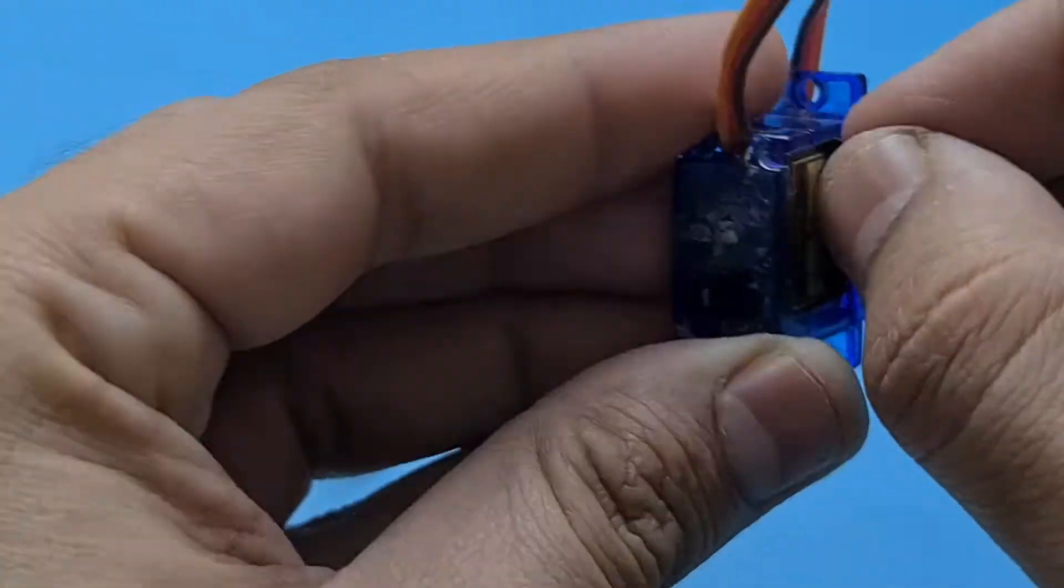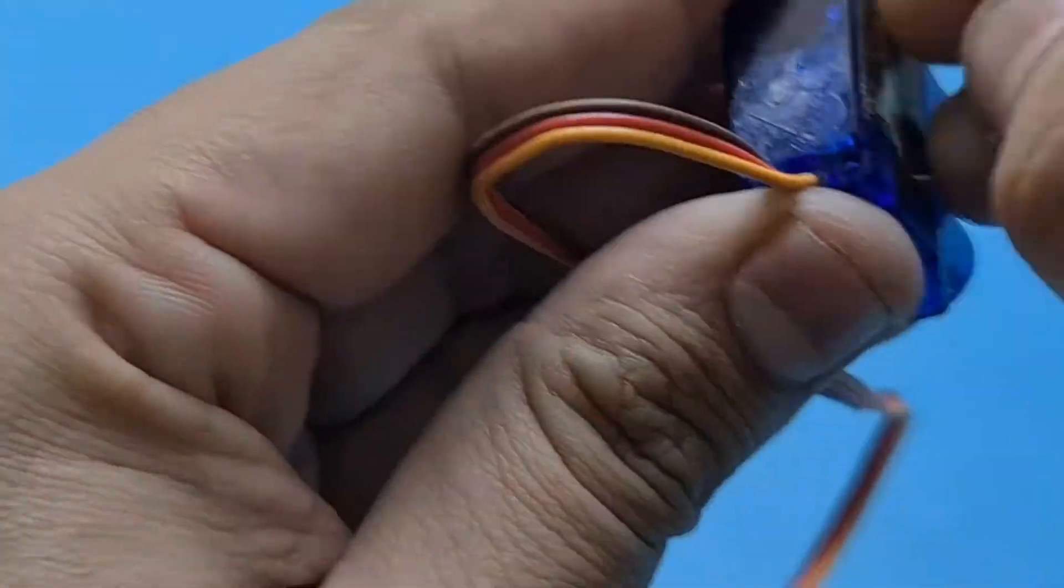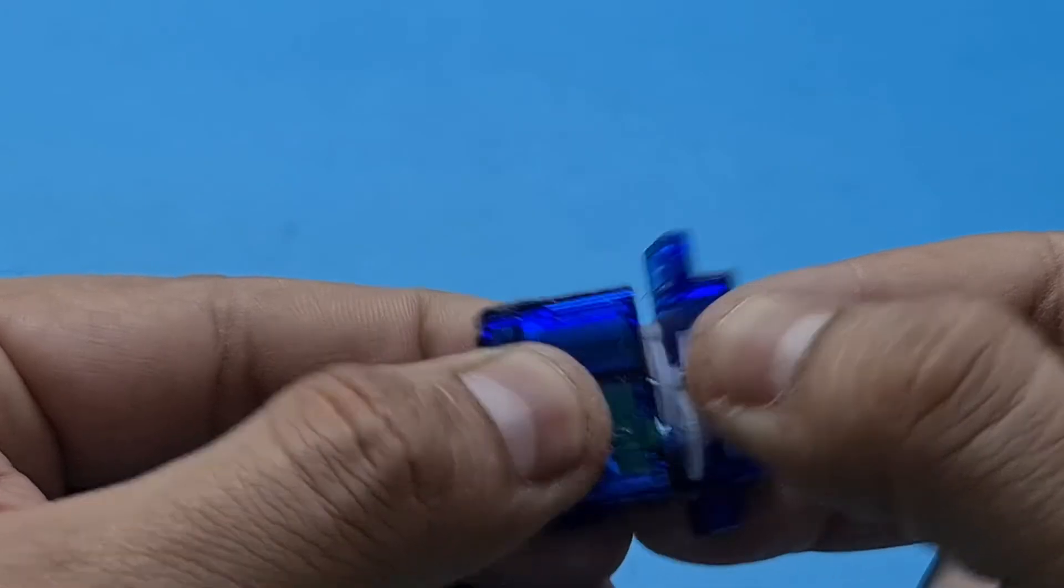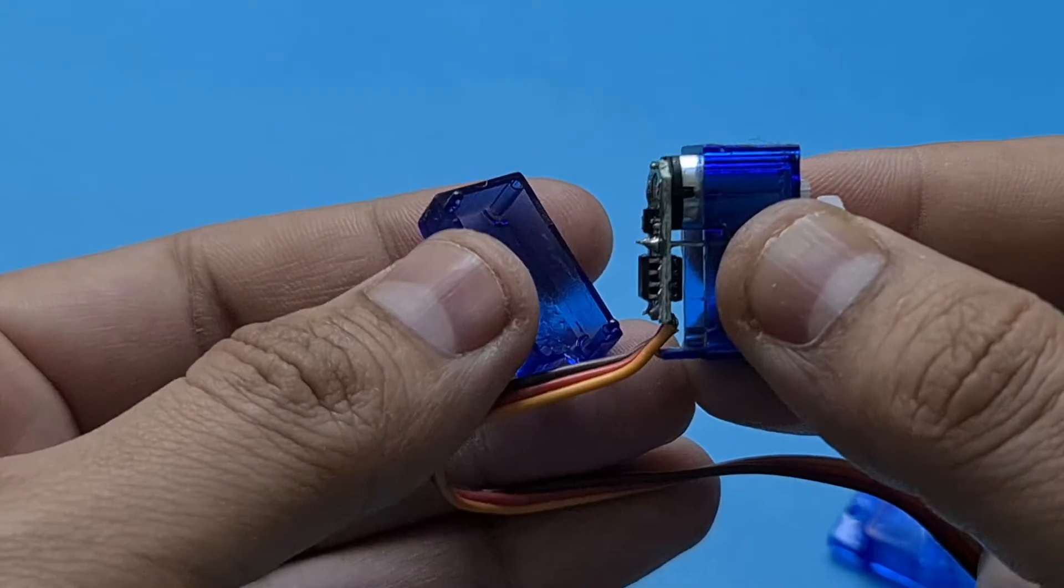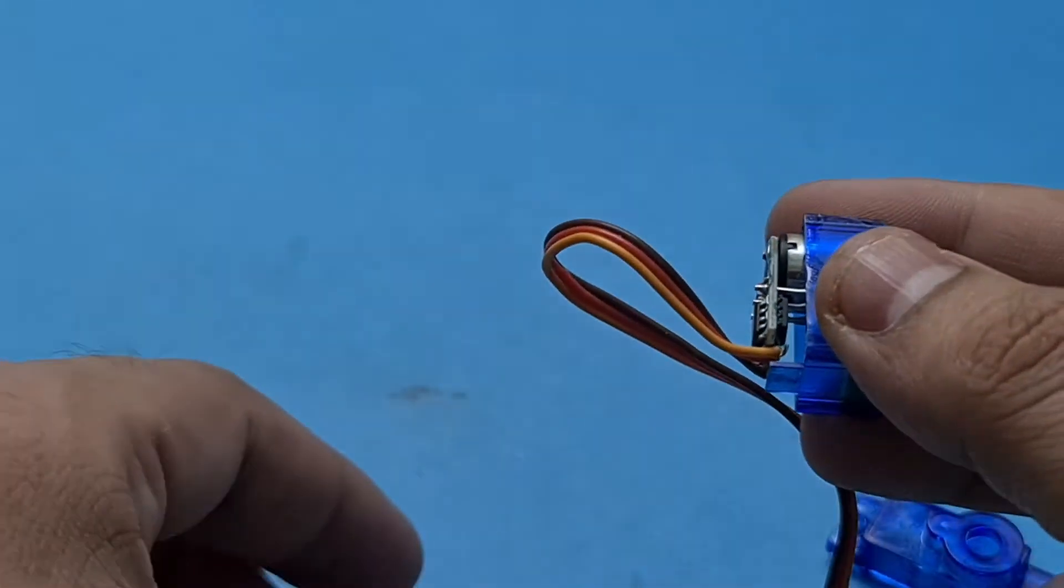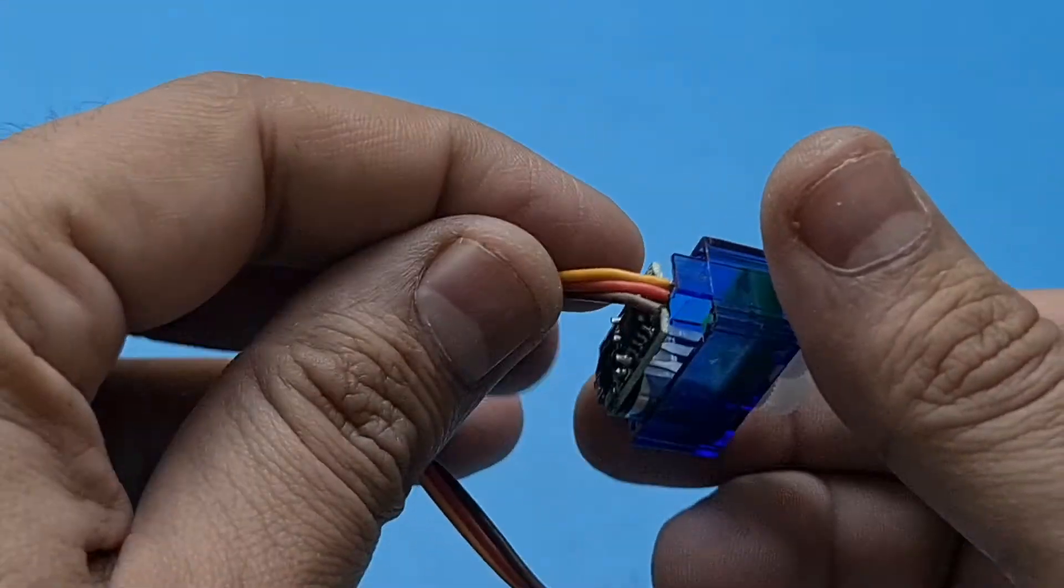Now gently pull the body apart and try not to drop these small gears on the floor—they can easily go missing. And here you can see the problem: this wire is detached from the board.